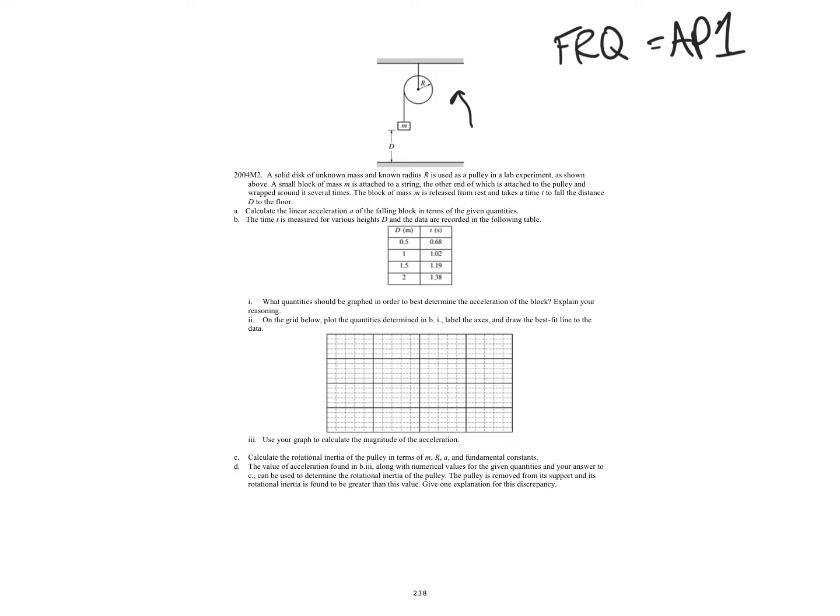The string's wrapped around it a couple times, attaches to this little small pulley, and it pulls it down a distance D. So part A is calculate the linear acceleration of the following block in the terms given. Now we have D, and that's really all we have to do this. We don't know mass, we have a radius. We also know its velocity initial is zero because it says it starts from rest, and you're trying to find acceleration.